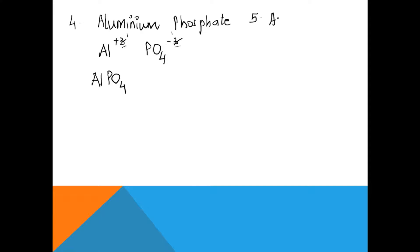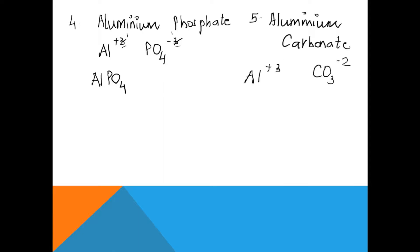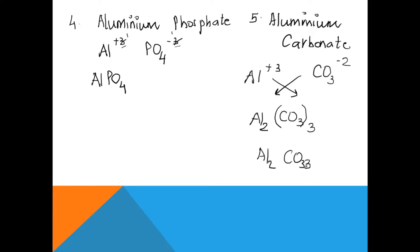Let's take another example with aluminium: aluminium carbonate. Aluminium is Al³⁺ and carbonate is the radical CO₃²⁻. They cannot be cancelled because one is 3 and the other is 2. So we use the crisscross method. The 2 goes to the feet of aluminium and the 3 goes to the feet of carbonate. Since carbonate is a radical, we put it in brackets and write 3 outside: Al₂(CO₃)₃. Many students mistakenly write Al₂CO₃₃ — that is wrong. The correct formula is Al₂(CO₃)₃.